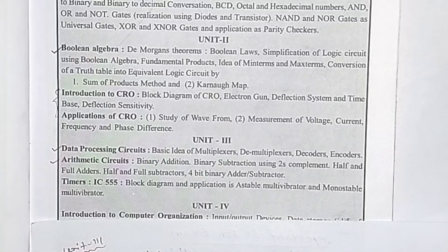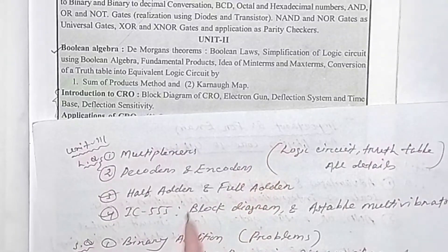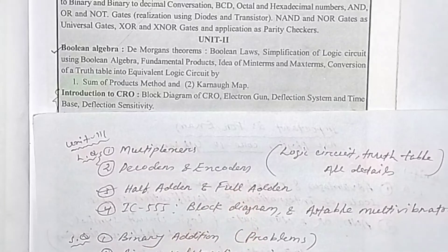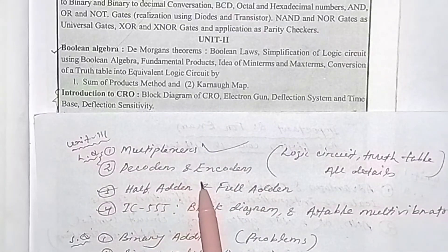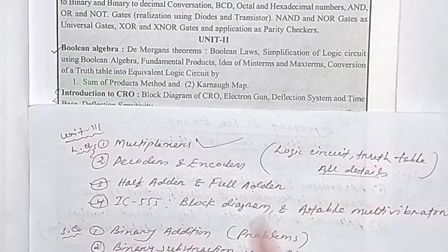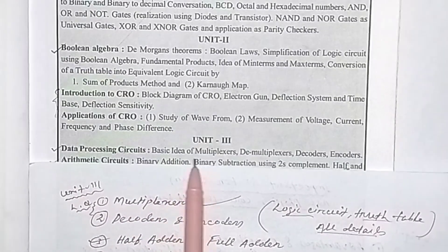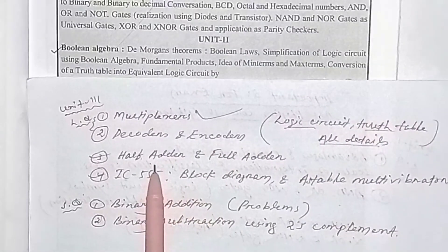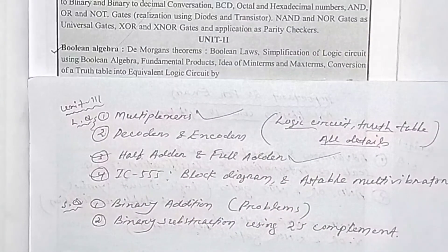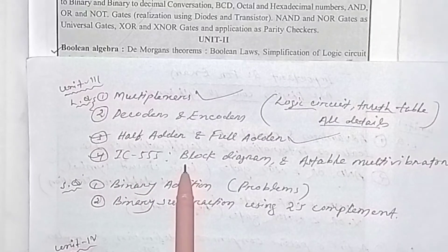Unit 3 covers data processing circuits. From the first chapter: multiplexers, decoders, and encoders are important — know their logic circuits, truth tables, and all details. From the second chapter: half adder and full adder are important long question topics.